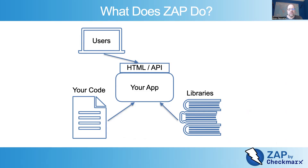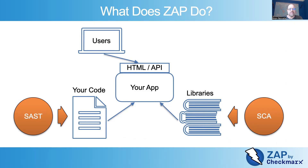So if you know about other security tools, you might have heard of SAST or Static Application Security Testing. This actually tests your code — it looks at and analyzes your code to find potential vulnerabilities. Then there's SCA or Software Composition Analysis, and this analyzes the libraries you use looking for known vulnerabilities in those libraries. So both SAST and SCA analyze the components that make up your application, but they're not actually attacking them — they're just looking at the contents of how your application is built.